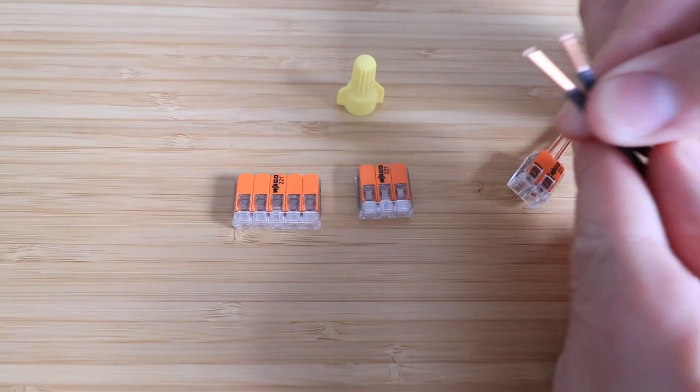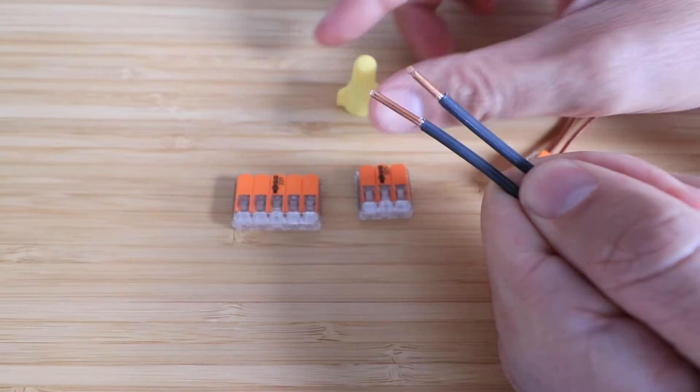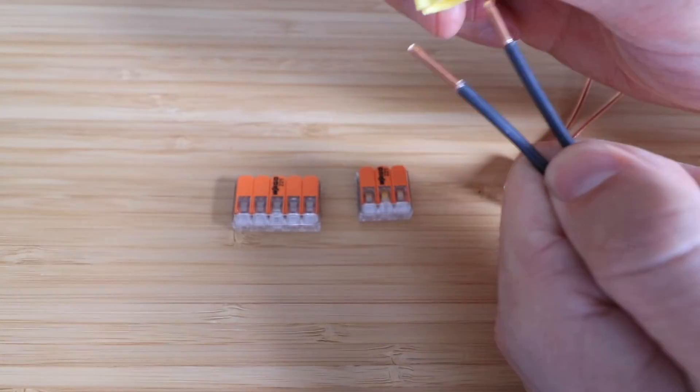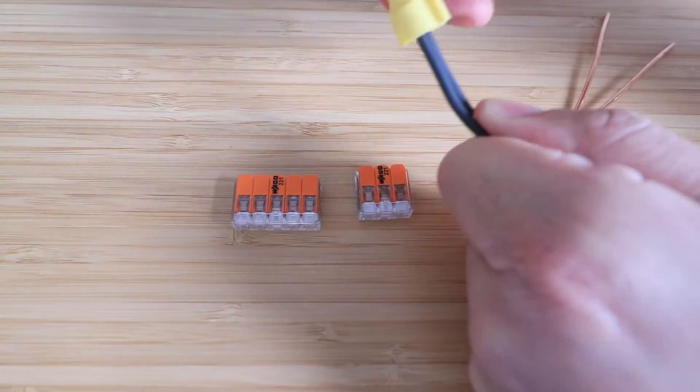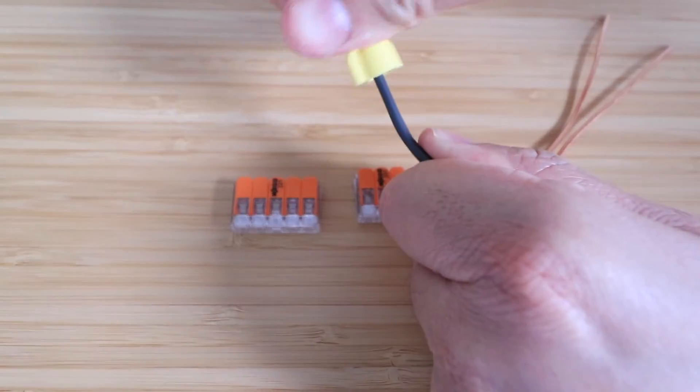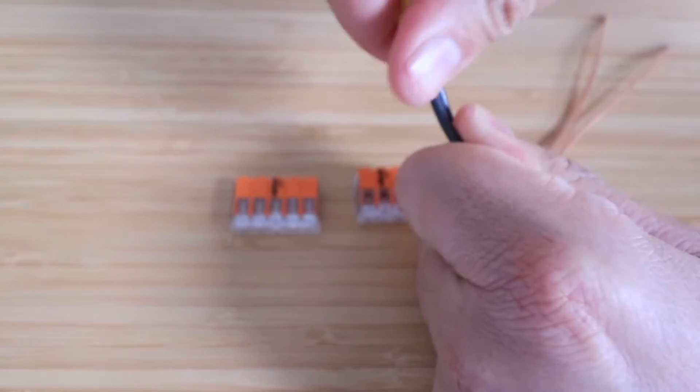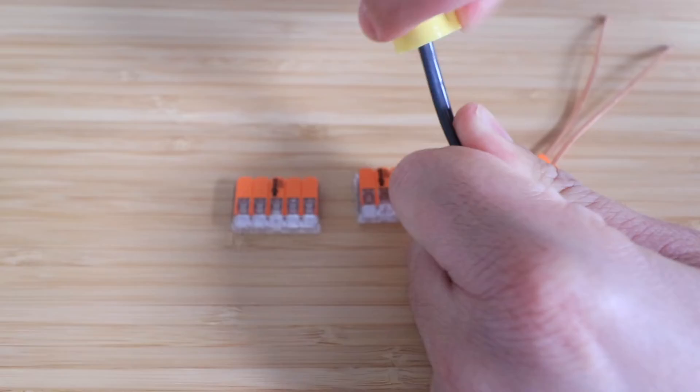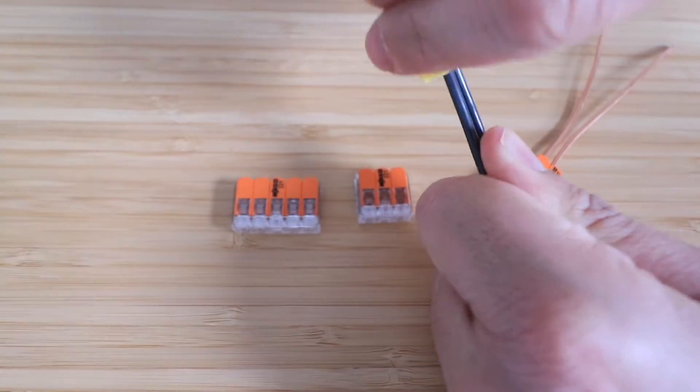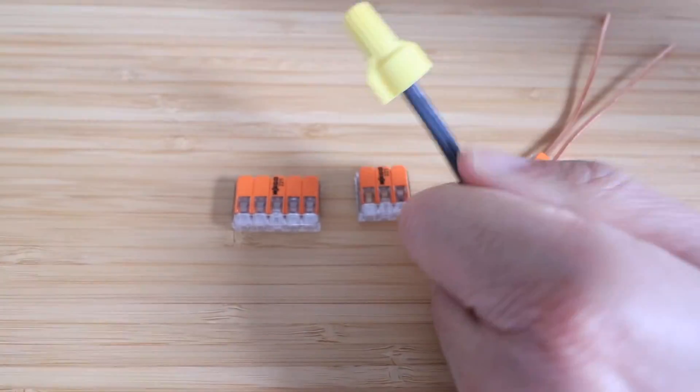Versus if you're using a traditional wire nut, you got to make sure that you've got it stripped properly, you put them in here, just kind of fiddle with them, and then you've got to twist until these really connect together. So the Wago are much quicker than a traditional wire nut.